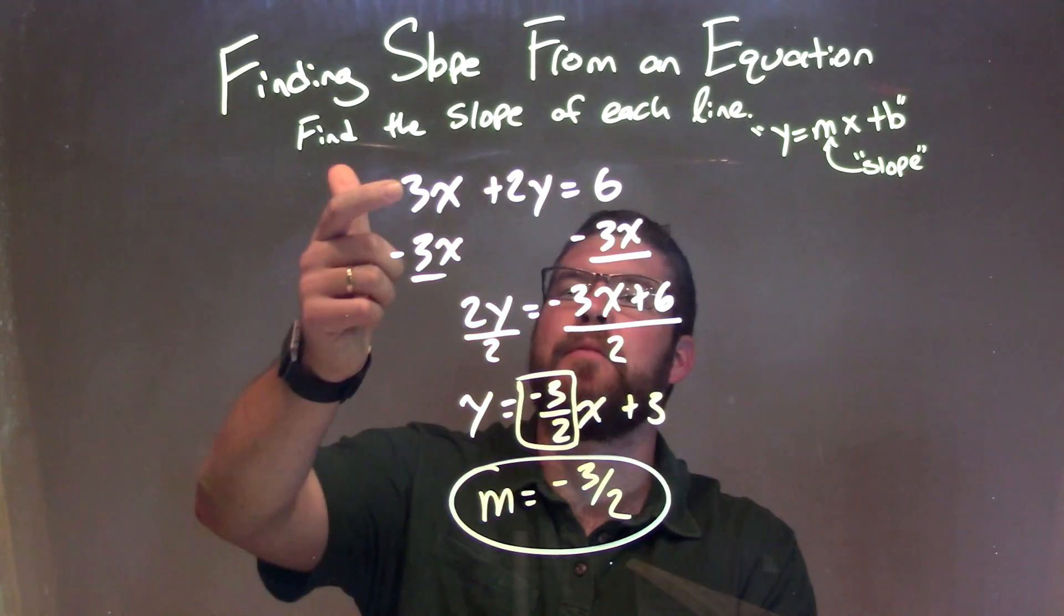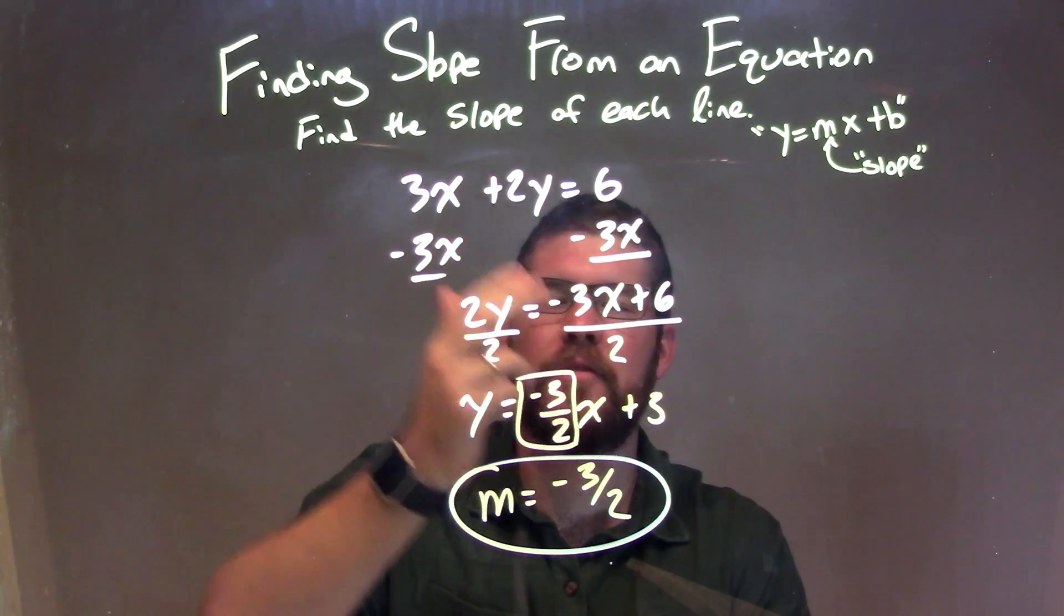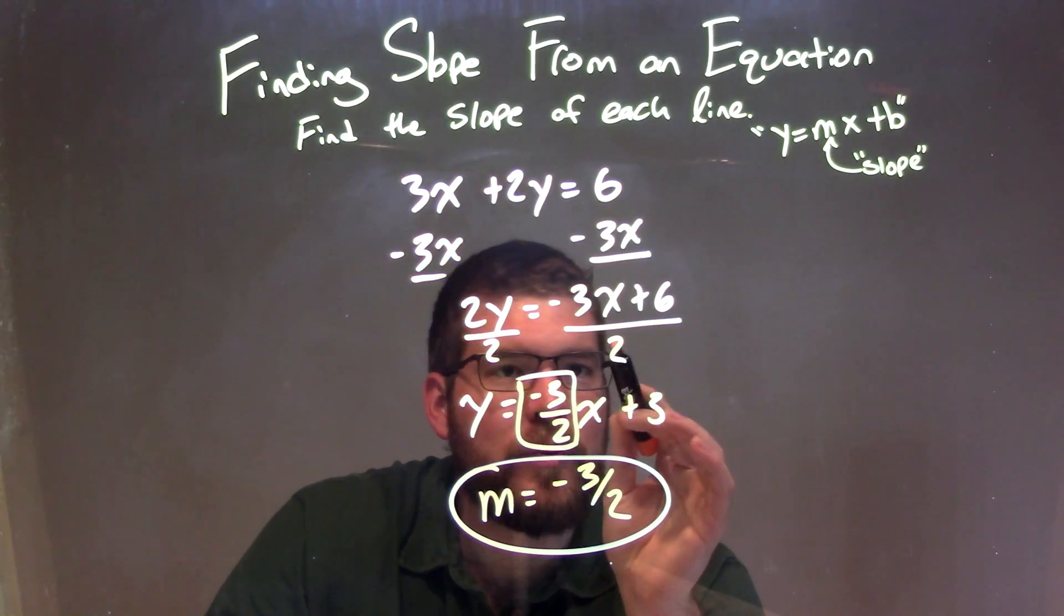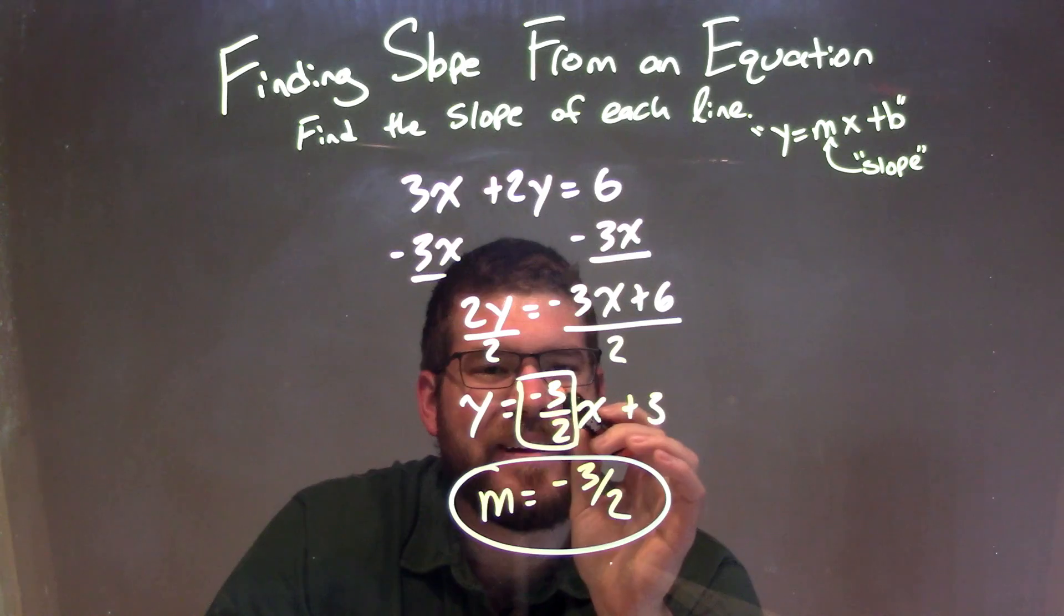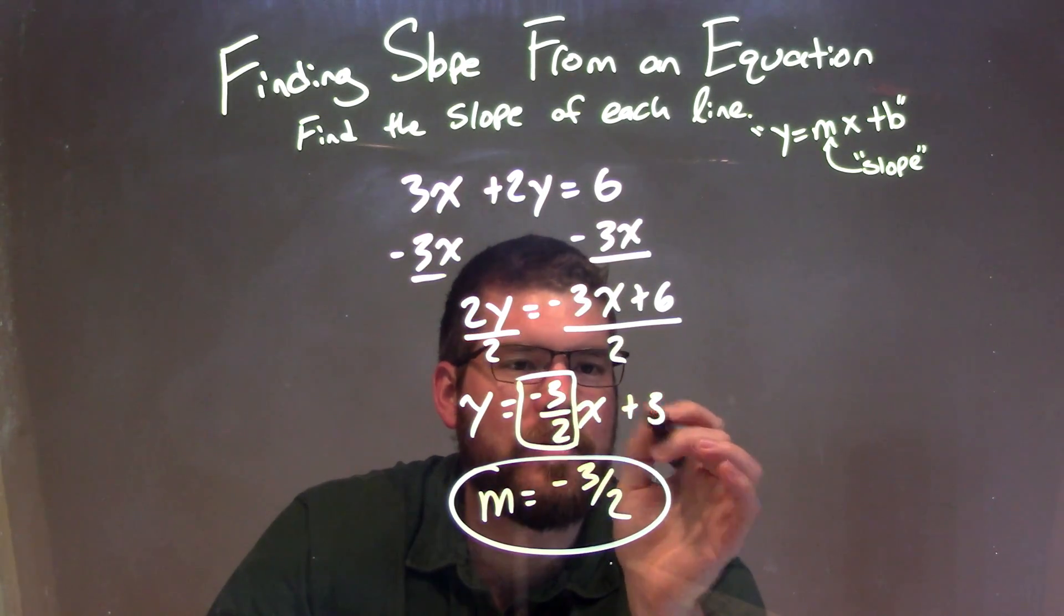So let's recap. We're given 3x plus 2y equals 6. I subtract 3x from both sides to isolate y. Then I divide by 2 on both sides. y is all isolated now. When I distribute the 2 to both parts, I'm left with negative three-halves x plus 3.